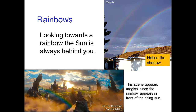This scene from Oz the Great and Powerful is particularly magical, because we can't have a rainbow appearing in front of the sun in nature — the sun would have to be behind you. Since we've never actually seen this in real life, probably without even realizing it, this looks exceptionally magical.